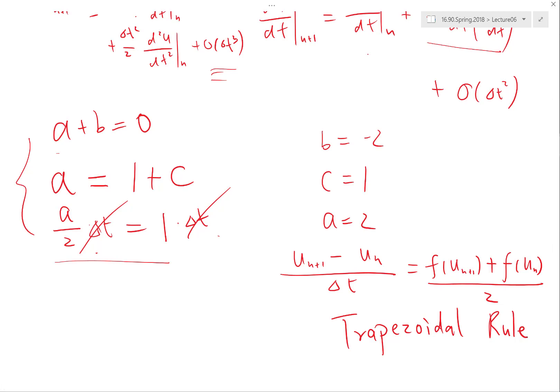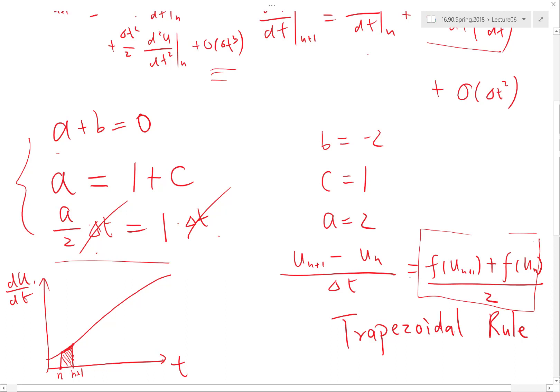This is called the trapezoidal rule of doing time integration because this is almost like approximating the integration. You are integrating du/dt to get u. And here you are saying I'm approximating this interval between n and n+1, which you want to integrate to see the difference between u_n and u_{n+1}, using a trapezoid. This times delta t is the average between the height here and the height here times delta t, which is the area of the trapezoid.